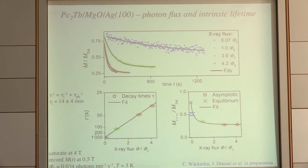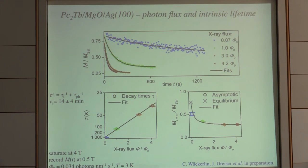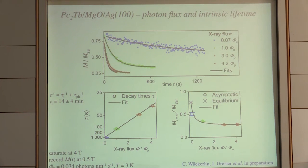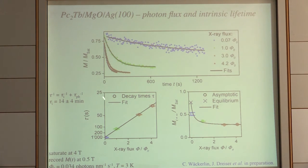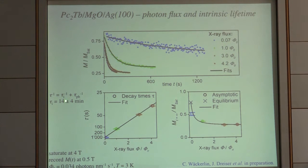One important thing is how you disturb your system by the measurement — this is often neglected and must be considered with STM and other techniques. Shown here with XMCD: we first saturate the sample at four tesla, then go to 0.5 tesla or 0 tesla and watch the magnetization decay. A noisy curve decays very slowly while less noisy curves decay much faster — higher photon flux gives better signal-to-noise but makes the magnetization decay faster. Plotting one-over-decay-time, you have one intrinsic part and one photon-induced part. From this you can deduce the intrinsic lifetime.